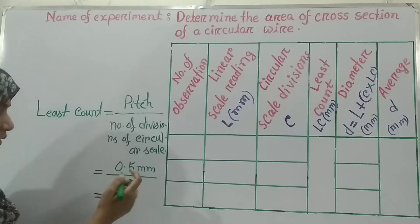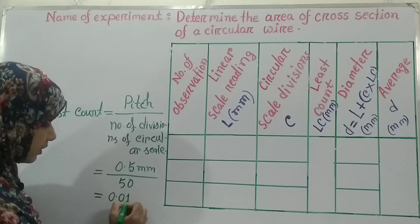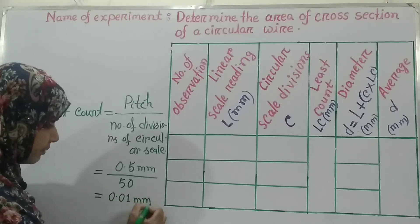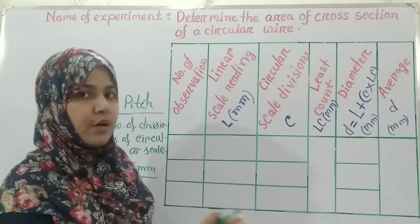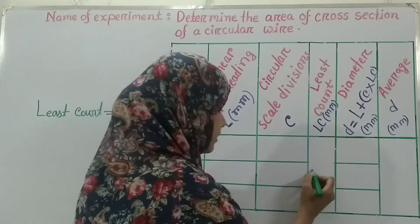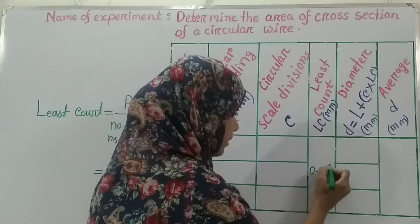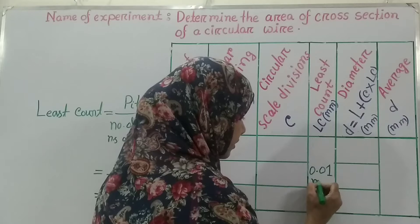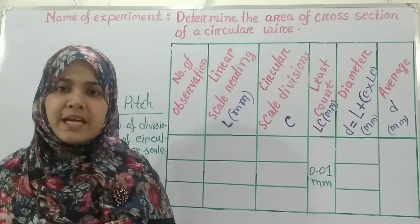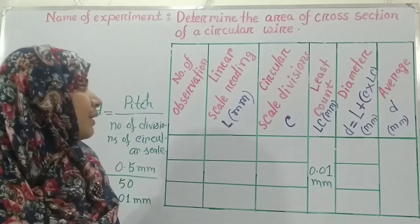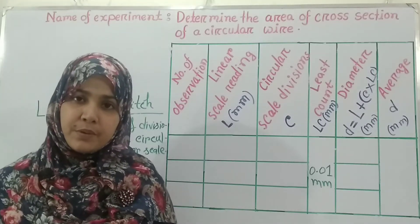So least count equals 0.5 divided by 50, which equals 0.01 millimeter. That means the value of the least count of this instrument is 0.01 millimeter. Now it is time to take the readings of the linear scale reading and circular scale reading.